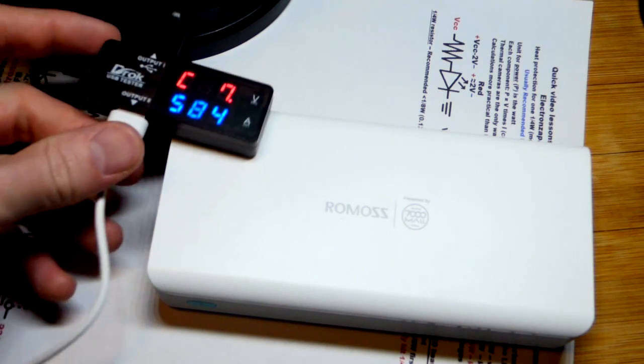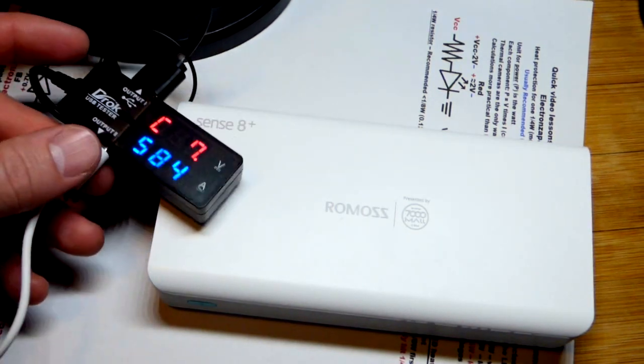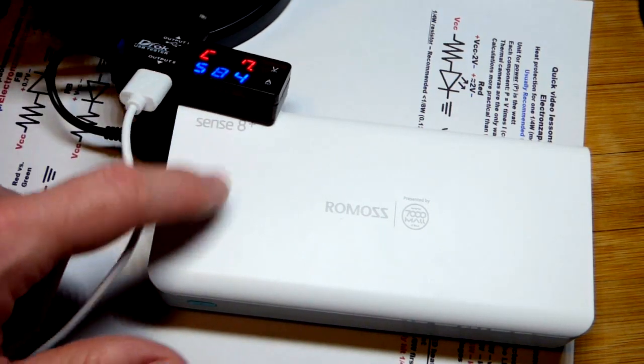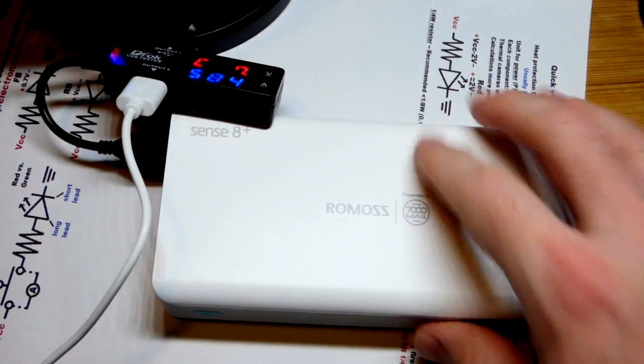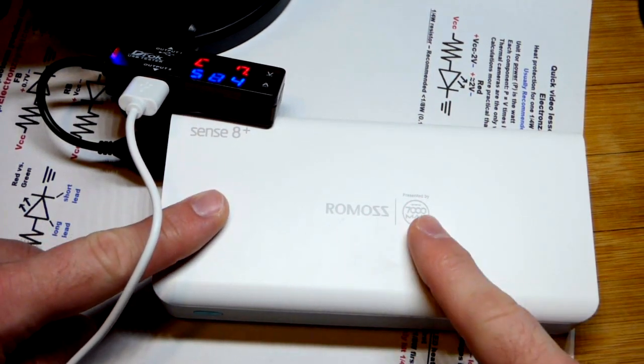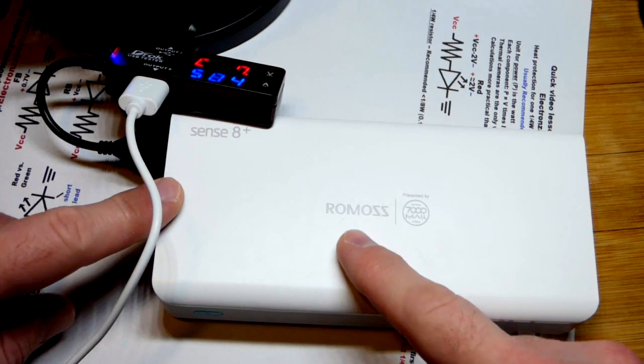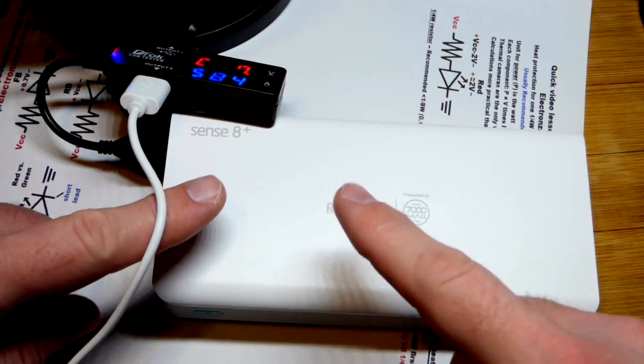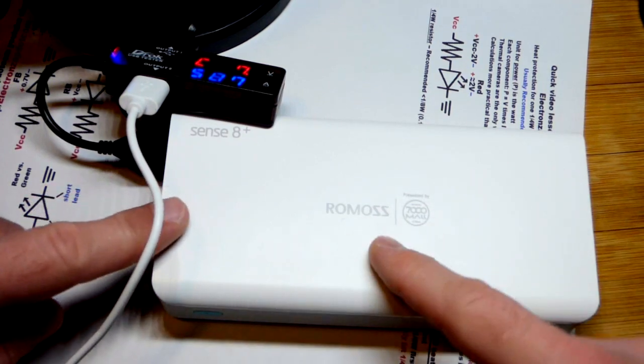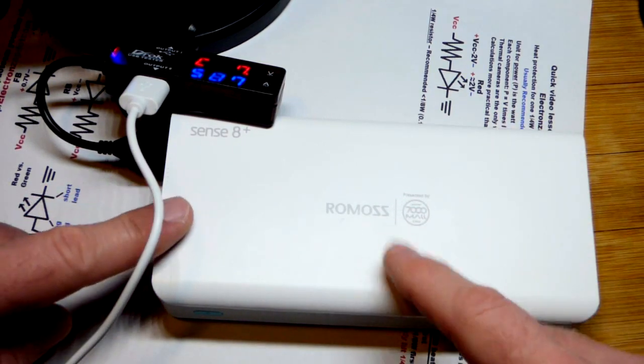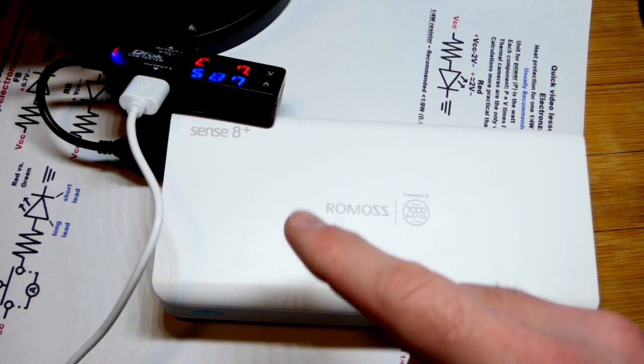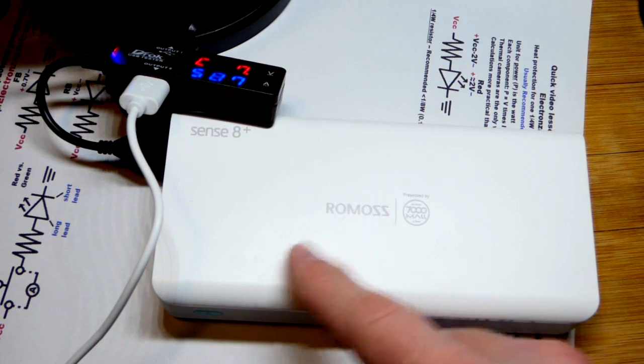I think we're probably definitely not going to get close to 30, 30 amp hours or 30,000 milliamp hours however you want to convert it. But I'm pretty sure that first off this unit is measuring it at five volts. The battery in here is probably a lithium based battery, so the battery inside of here might actually provide 30,000 milliamp hours. It may be able to provide one amp for 30 hours or two amps for 15 hours, half an amp for 60 hours. That's what 30,000 milliamp hours means.